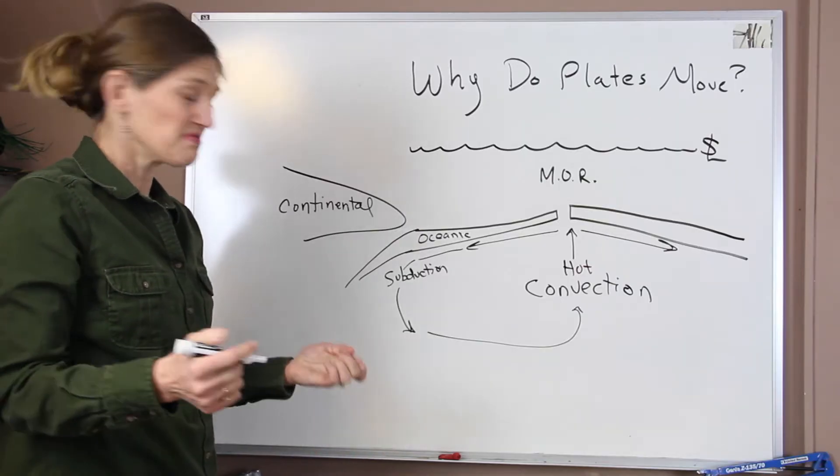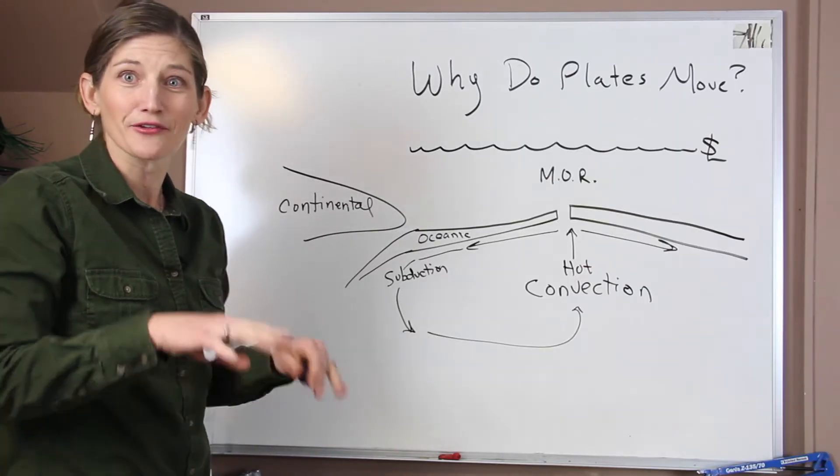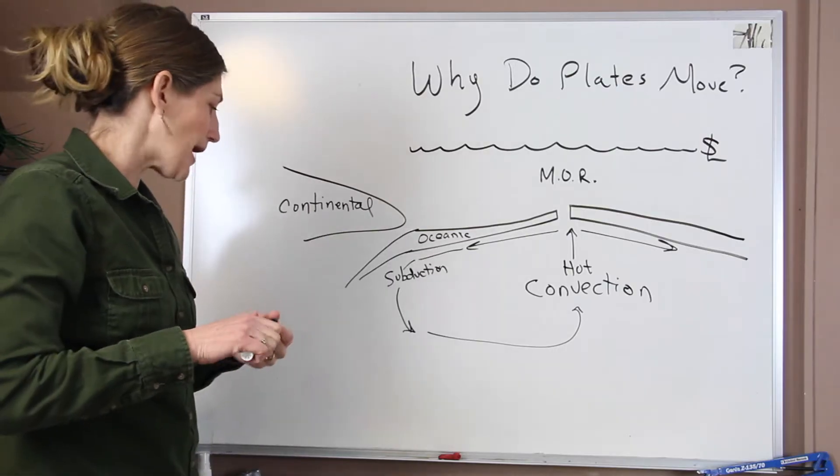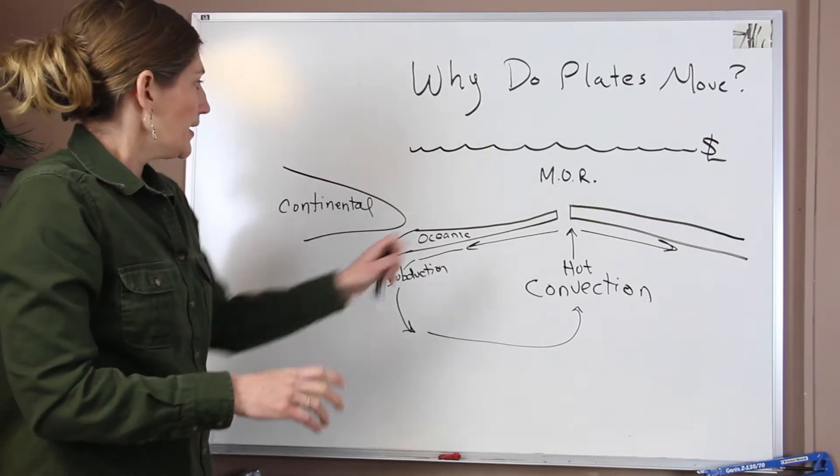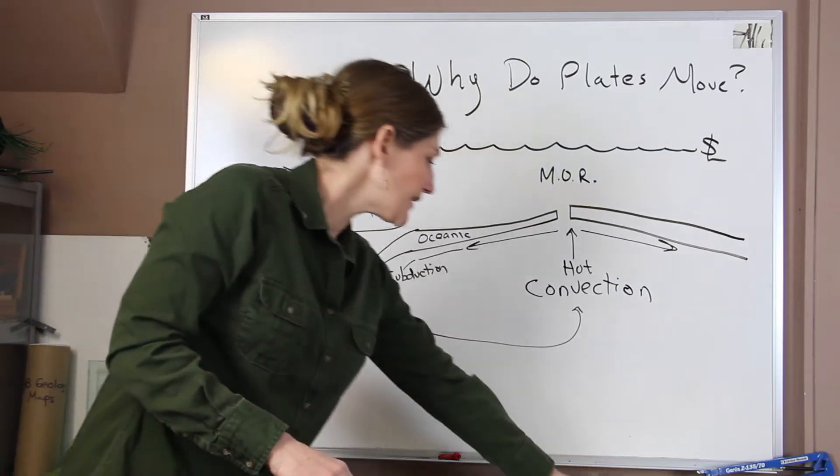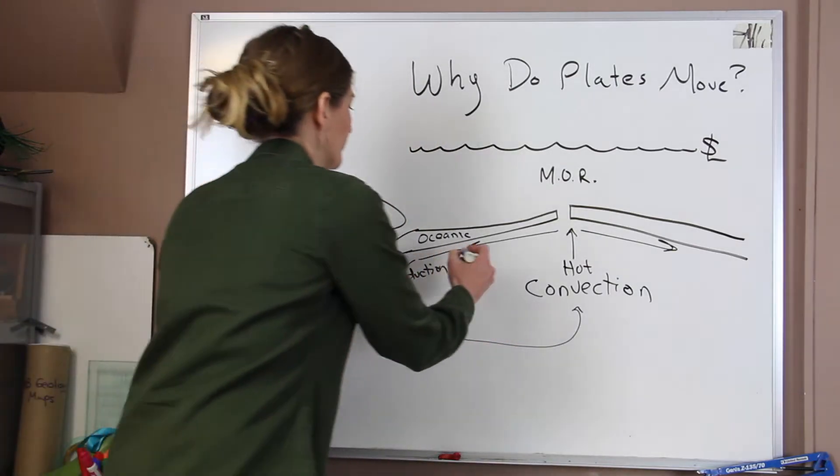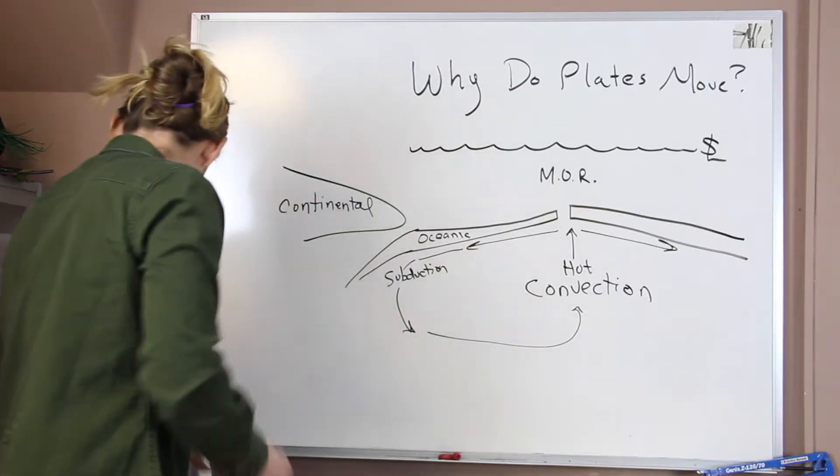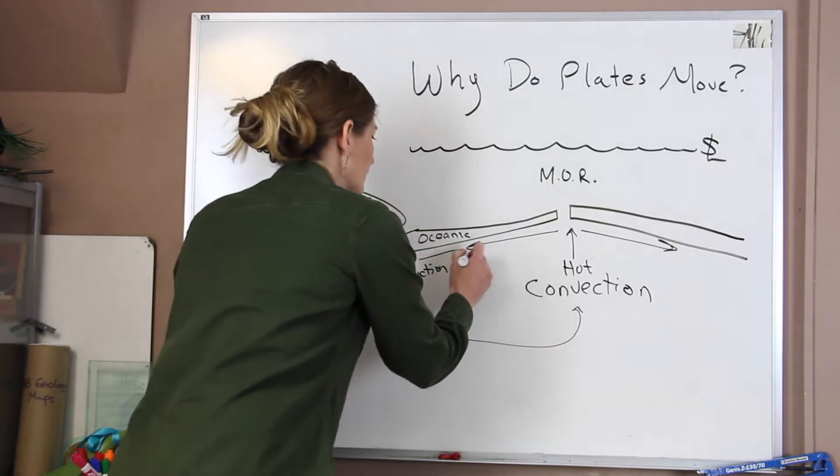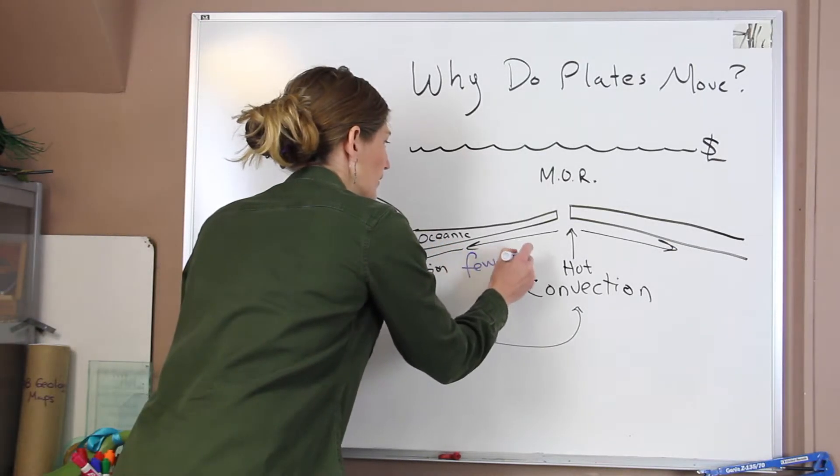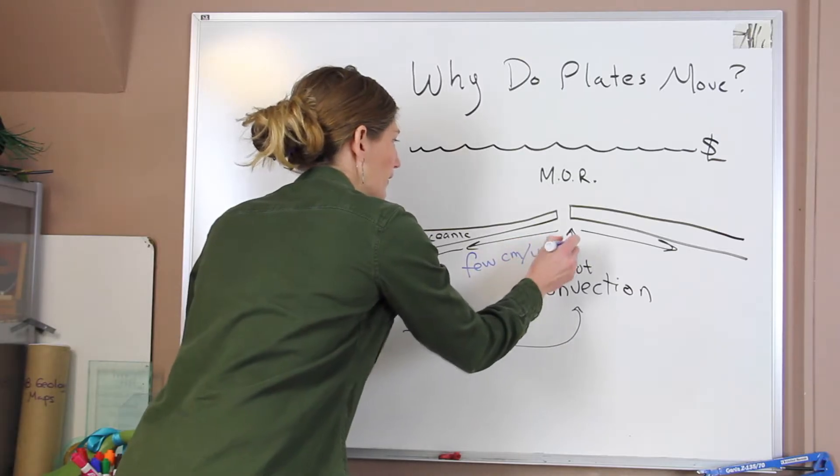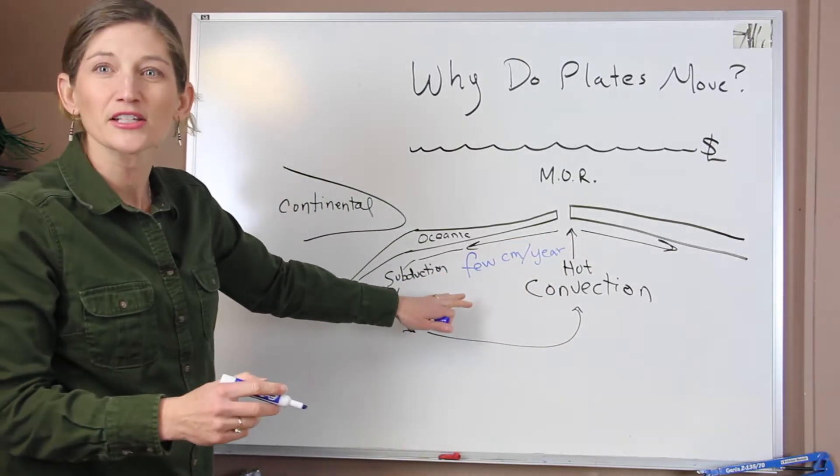And that's pretty logical. It makes sense that if you have something moving around below, the plates on top are going to move. Well, what we've found out is that our mantle moves at a few centimeters per year.